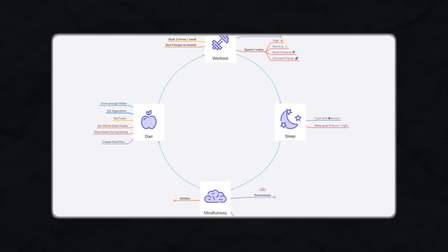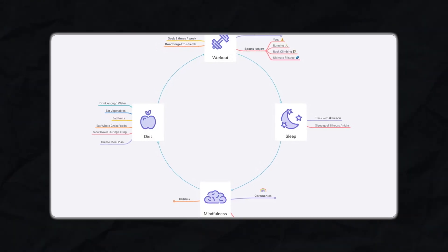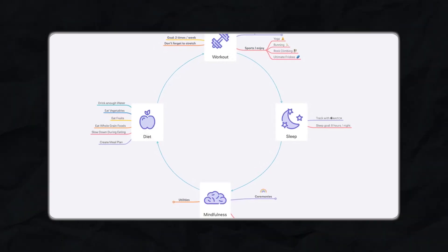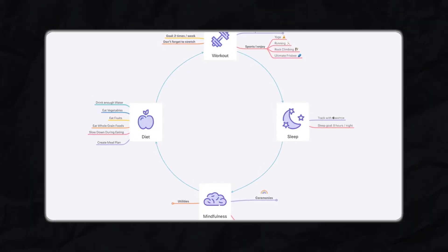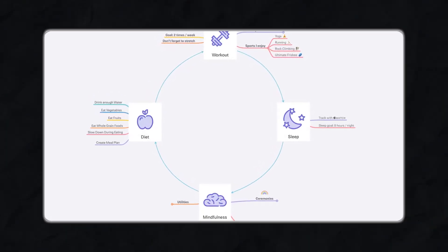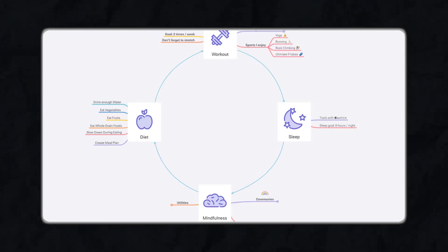For everyday users, this means you can create a grocery list, a travel itinerary, or even a workout plan and track your progress directly within the app or through one of its integrations. It's a small feature that adds a lot of value, making MindNode more than just a brainstorming tool.